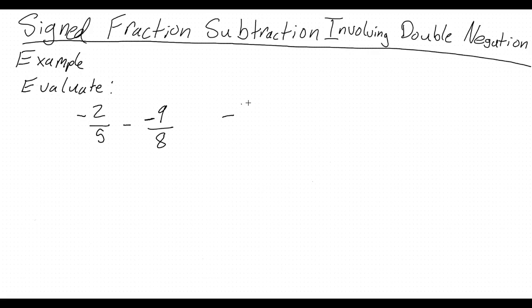So the expression simplifies to negative 2 fifths plus 9 over 8. Now that we've taken care of the double negative, we can add the two fractions. We check to see if the denominators are the same, but in fact they are not.